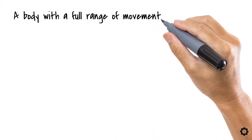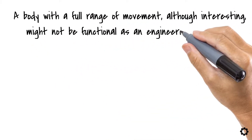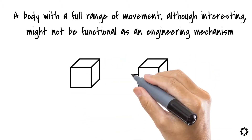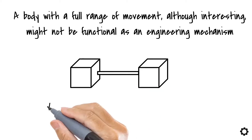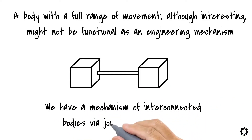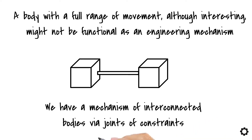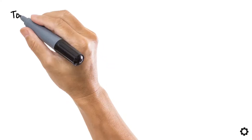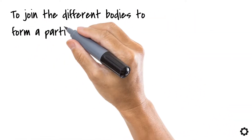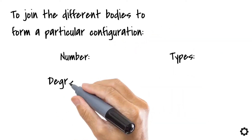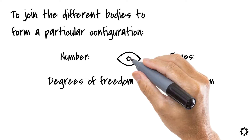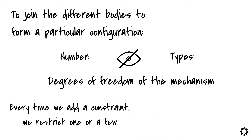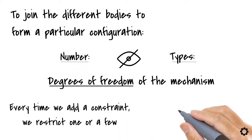A body with a full range of movement, although interesting, might not be functional as an engineering mechanism. We need to have more than one body and we would definitely need to join them together so that at the end we have a mechanism of interconnected bodies via joints or constraints, forming a mechanism useful in performing an action. Because we are using constraints to join the different bodies, knowing the number and types of degrees of freedom of the mechanism might not be that easy to see. Every time we add a constraint, we restrict one or a few degrees of freedom.